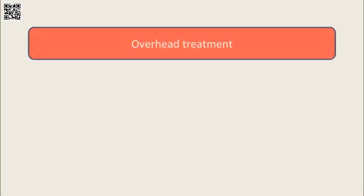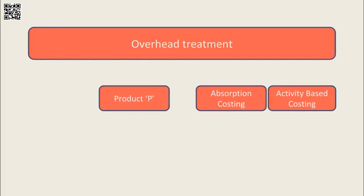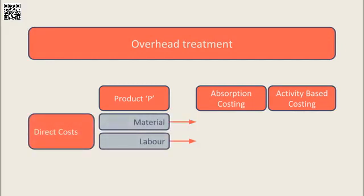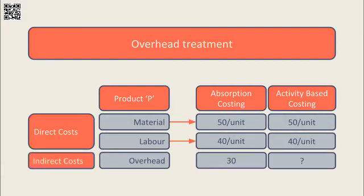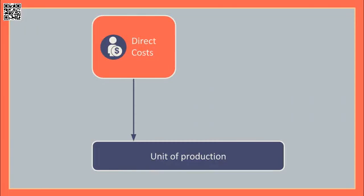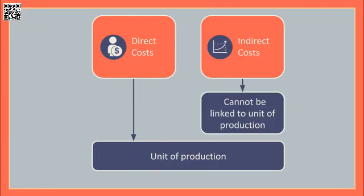Before delving into activity-based costing in more detail, it is important to put this treatment of overheads into some context in terms of how they were traditionally treated under absorption costing. Company A manufactures two products, Product P and Product Q. Company A is trying to calculate the cost per unit of production of Product P using an absorption costing system. Material and labour are direct costs — we can link these costs to each individual unit of production. So the material cost is $50 per unit and the labour cost is $40 per unit for Product P. Indirect costs are also known as overheads; these costs cannot be linked directly to each unit of production, so we must find a suitable method of allocating the overhead amongst the units.